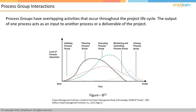For example, the project management plan is an output of the planning process group and an input to the execution process group. Note that production of the plan is not a one-time activity. As the project progresses, the project management plan may get updated as a result of the monitoring and controlling processes. The updated project management plan once again forms an input to the execution process group.